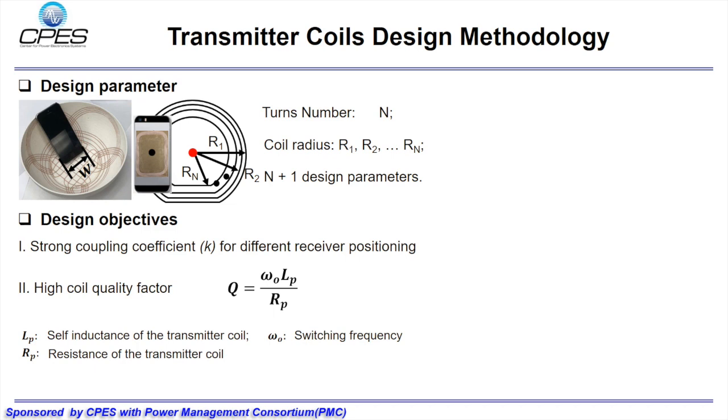To simplify the design parameters, we assume the coil interval between adjacent coils is the same. Therefore, the n plus 1 design parameters can be reduced to 3 design parameters: coil average radius, coil turns number, and the coil interval.